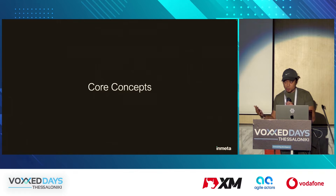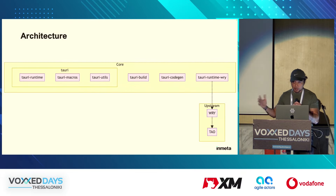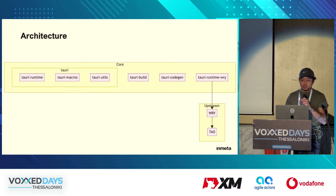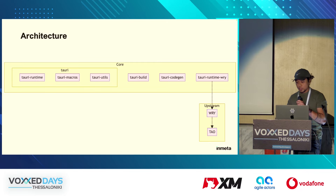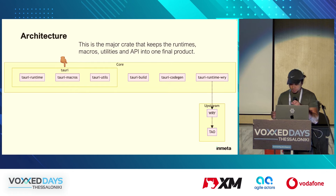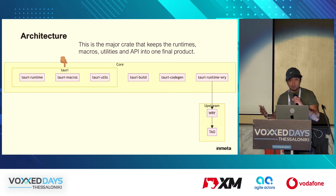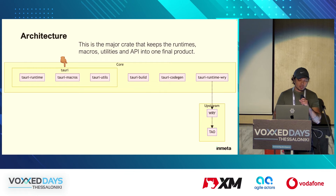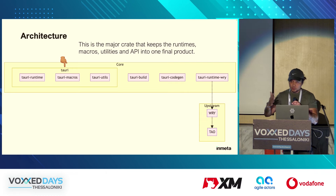Since this is new, we're going to go a little bit technical just to see the technology behind Tauri, and later on we're going to do a demo. Core ecosystem of Tauri: you have the AAB file for Android, the IPA file for iOS, or the EXE files for Windows — they need the runtime to run. The main crate keeps the runtimes, macros, utilities, and API in one final product. During compilation, it parses the tauri.conf.json file to enable features and configure the application, also referencing cargo.toml, which is the file for Rust dependencies.